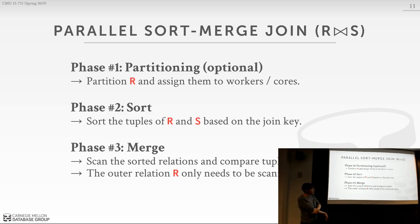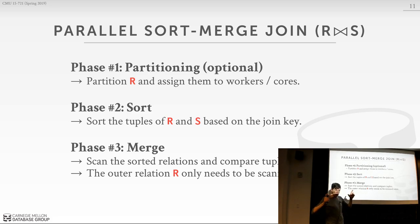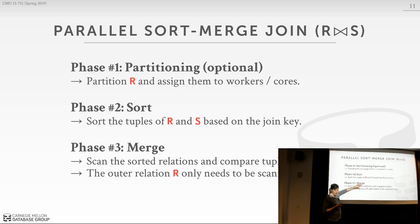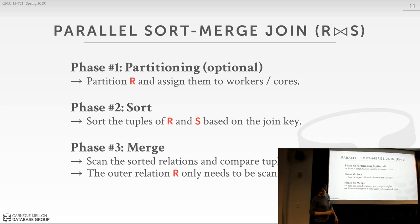In the parallel version, just like in hash join, we introduce an optional first phase where we do partitioning — splitting up our relations, assigning them to different workers so they operate in parallel. The question is where they write out their data — locally or globally — and all the same issues we talked about last time with hash join still apply here. Everything else is still the same: we sort based on the join key and then merge them together. How we set things up in the previous phases determines how we'll do the merge.